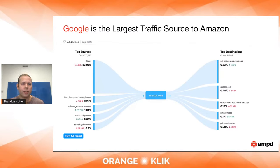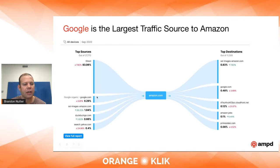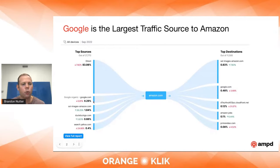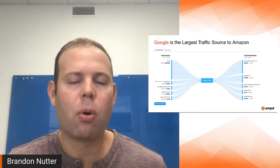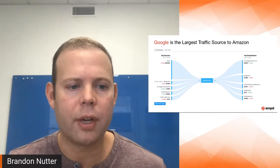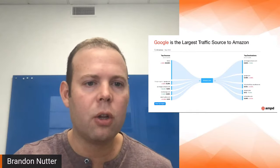So what does this mean for a seller? In order to be competitive, you need to be at the top of Google — and not only at the top of Google, but at the top for the right searches. A lot of these are high-intent searches where customers are searching for products on Google and other search engines and going directly to Amazon.com — whether a category site, a product listing, or a storefront page.